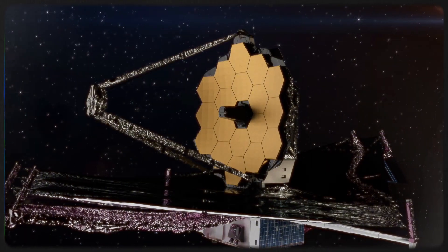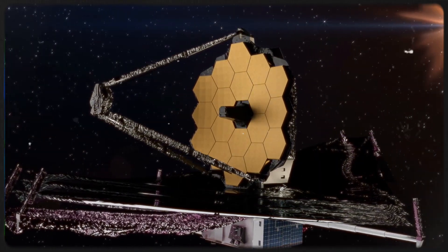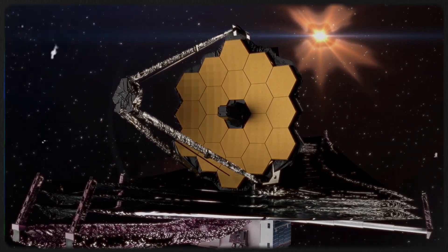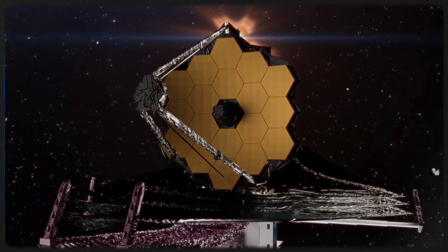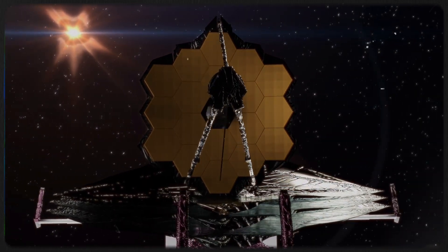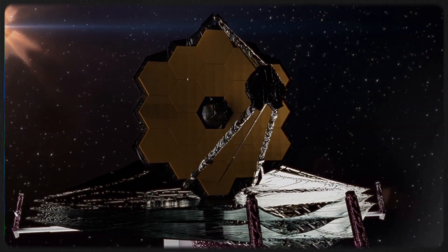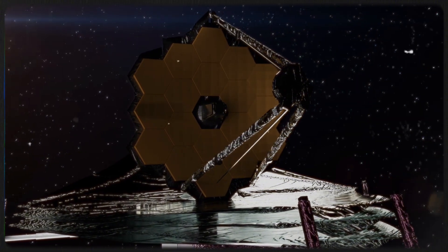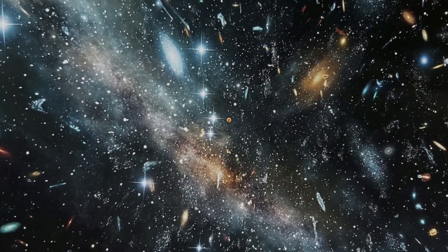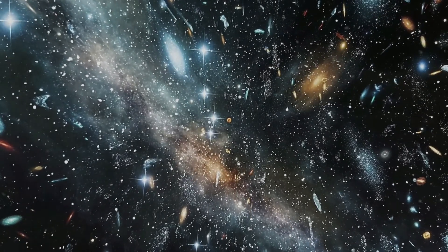Thanks to the James Webb Space Telescope, scientists are uncovering hidden layers of the universe's history, like peeling back the ultimate cosmic onion. Webb has captured glimpses of galaxies bustling with newborn stars and evidence of galactic mergers that may have fueled the growth of these early black holes. It's as if the young universe was hosting a chaotic gathering, with galaxies colliding and shaping new wonders in the process.